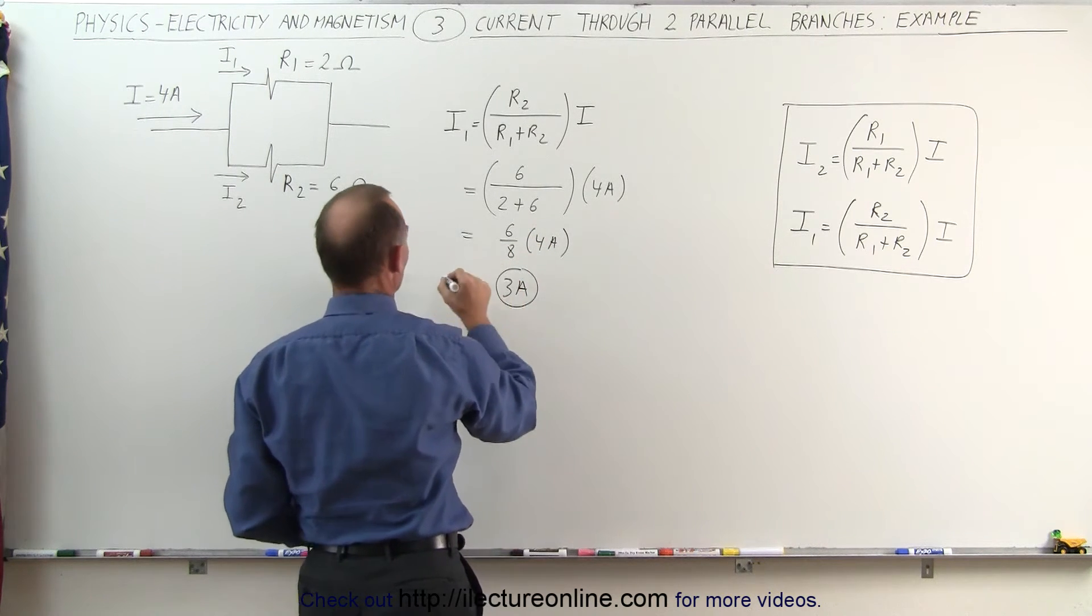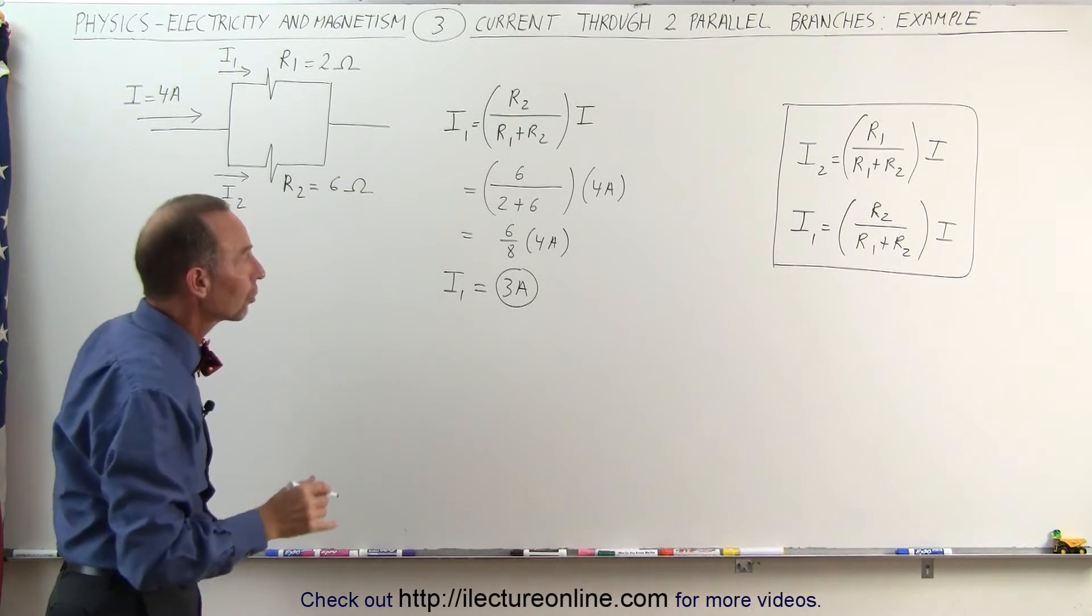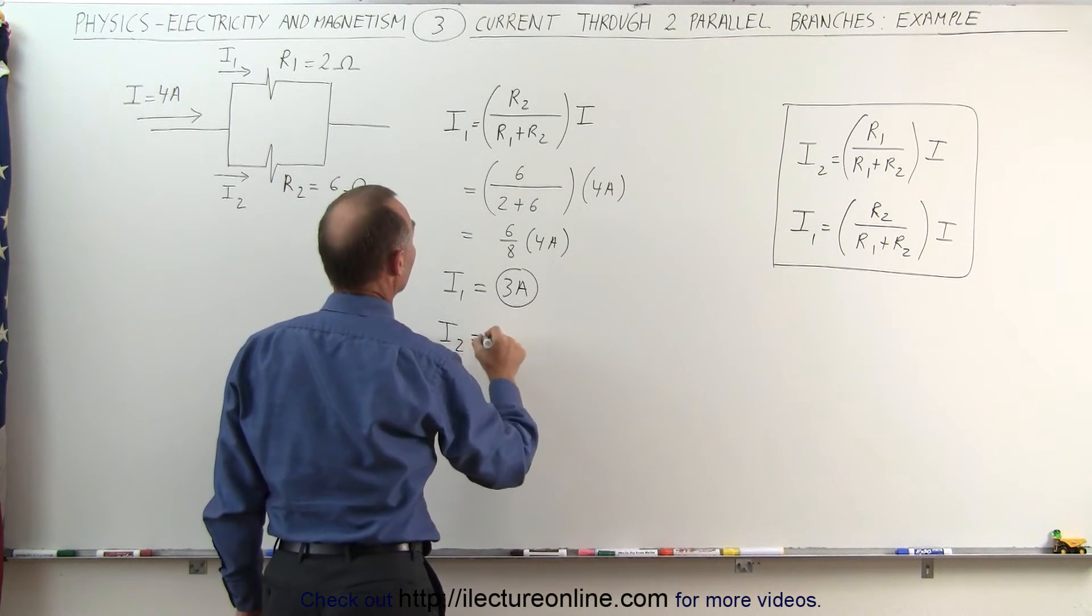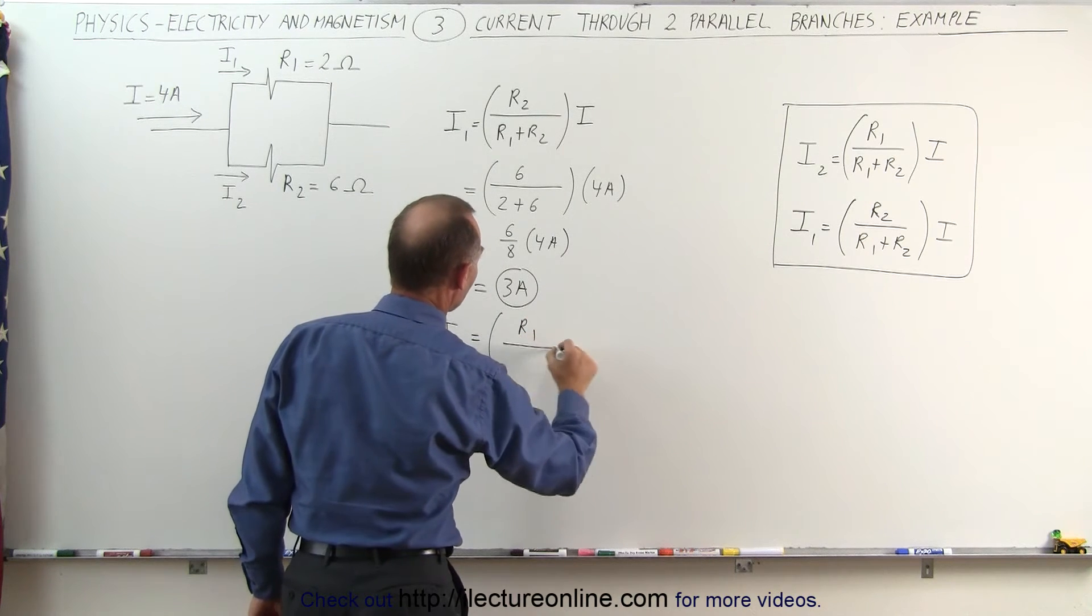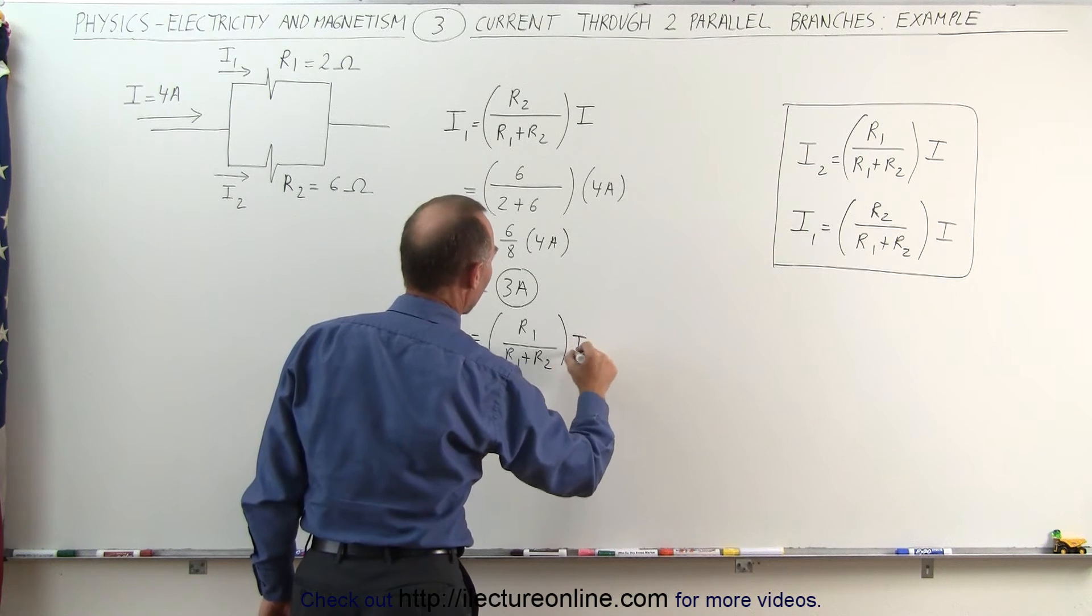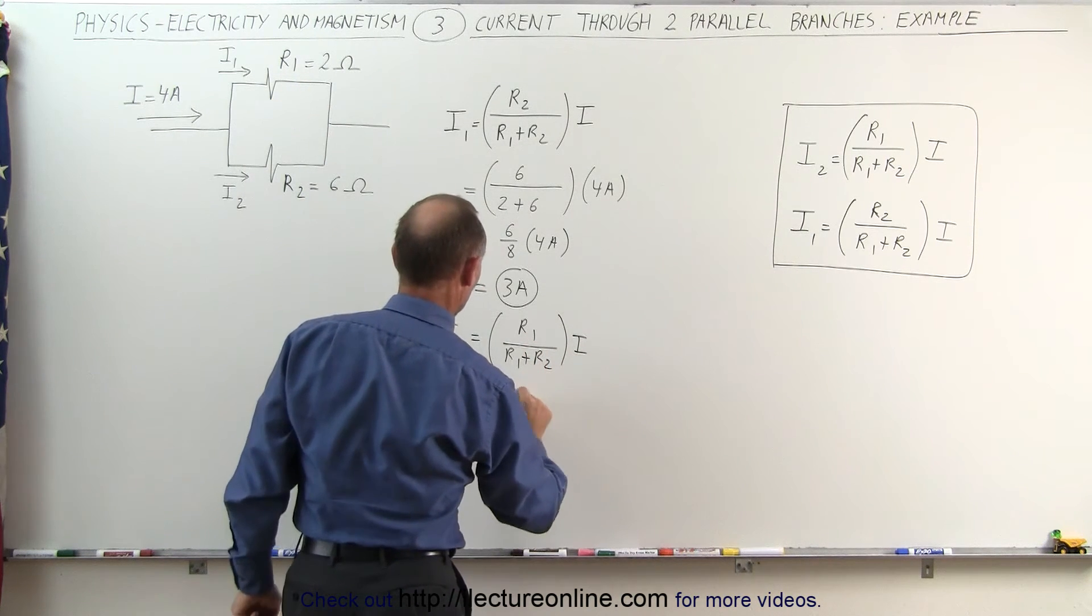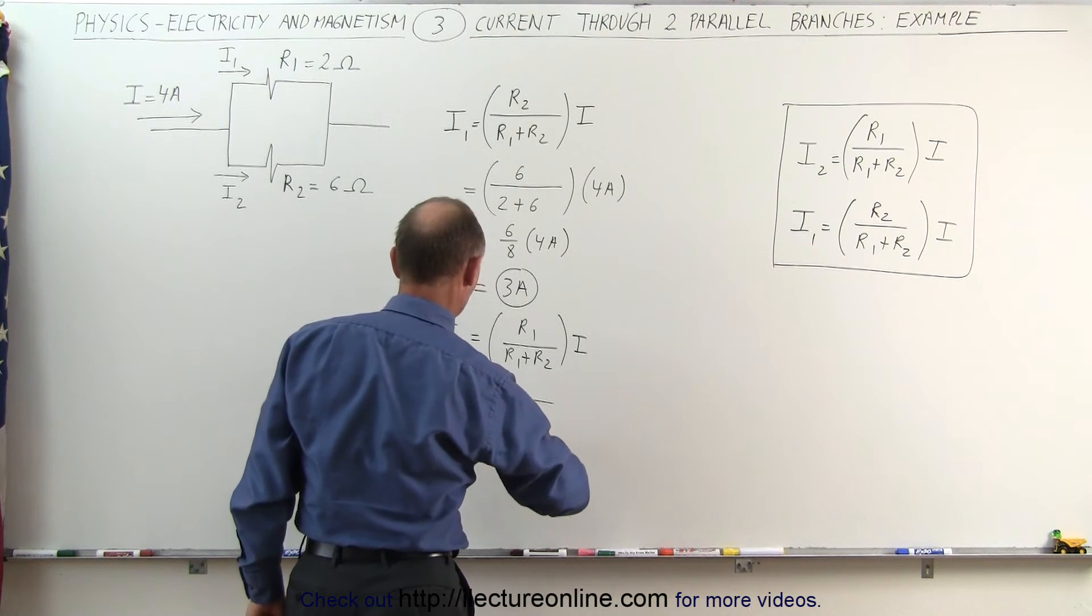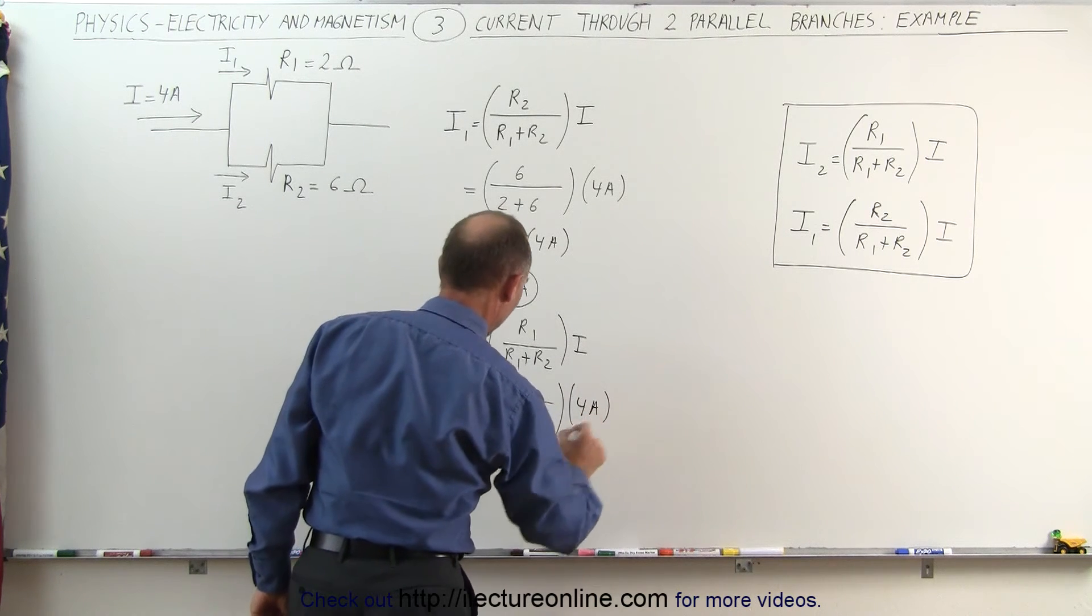3 amps is the current flowing through the top branch. Now let's calculate the current in the bottom branch. I2 equals R1 divided by R1 plus R2 times the total current I. So in this case, R1 would be 2 divided by 2 plus 6, times the total current of 4 amps,